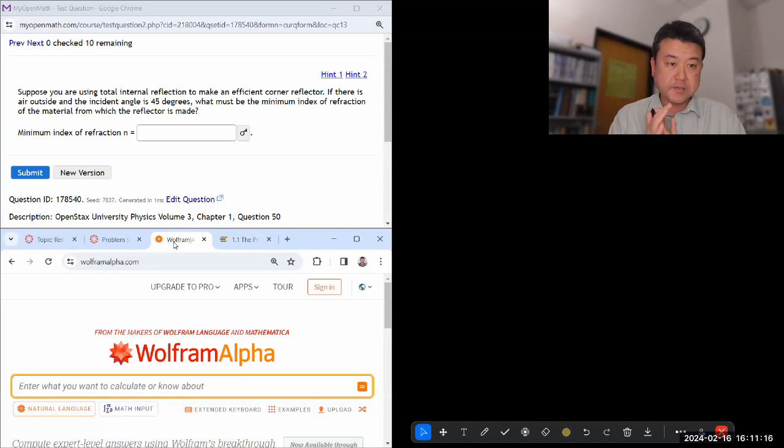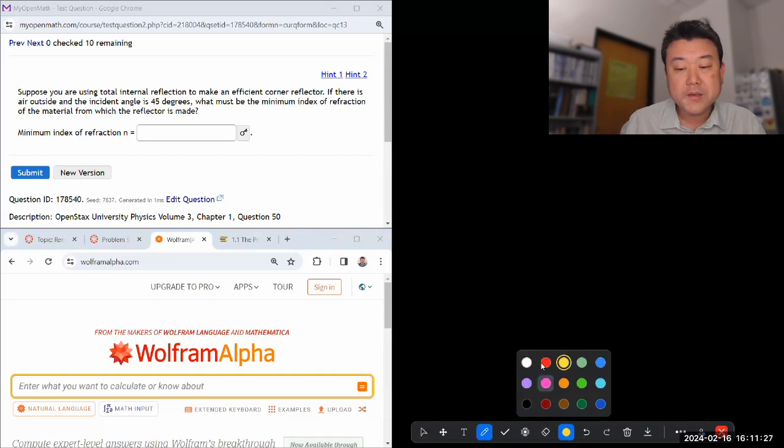Okay, let's look at this question. It says, suppose you are using total internal reflection to make an efficient corner reflector, the kind that you use in binoculars. I think your textbook has a picture of that. Let's just think about it.